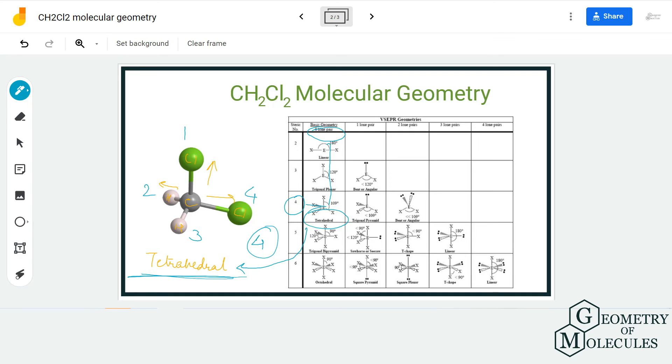Hence, the molecular geometry for CH2Cl2, that is dichloromethane, is tetrahedral.